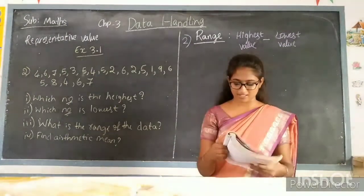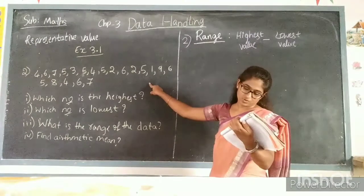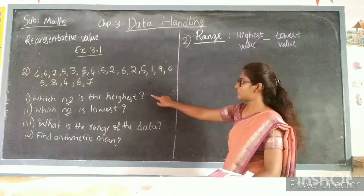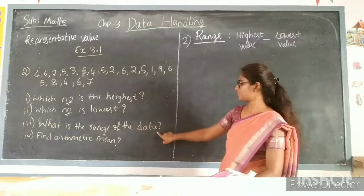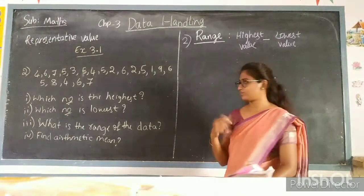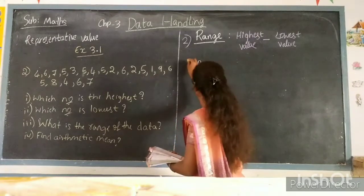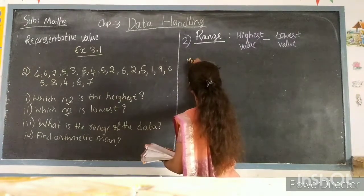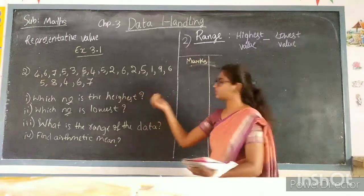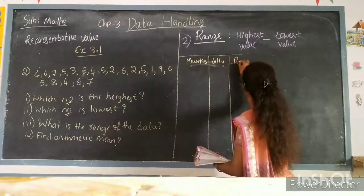The next question: organize the following marks in a class assessment in a tabular form and answer these questions — which number is the highest, which number is the lowest, what is the range of the data, and find the arithmetic mean. We know how to represent data in a tabular form. The first column is marks, and since marks might repeat, we are going to use tally bars — that is nothing but frequency.